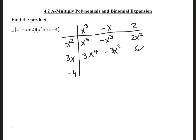This is negative 3x squared, and this is 6x, and this is negative 4x cubed, and this is 4x, and this is negative 8. Now we just need to put the like terms together.